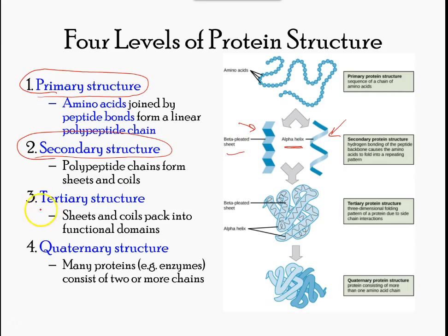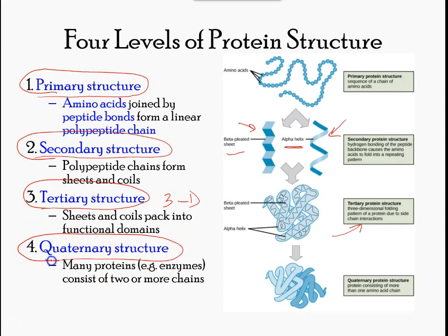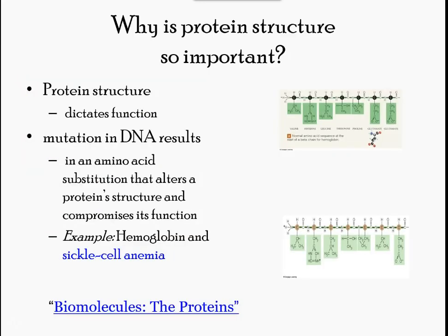The unique three-dimensional structure of a polypeptide is known as its tertiary structure, caused by chemical interactions between amino acids and regions of the polypeptide. Quaternary structures consist of more than one amino acid chain. Each protein has its own sequence and shape held together by chemical interactions.